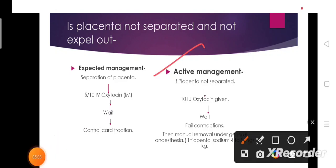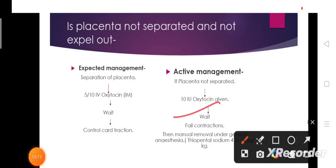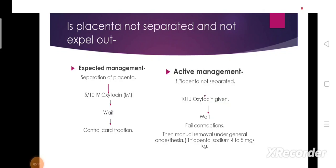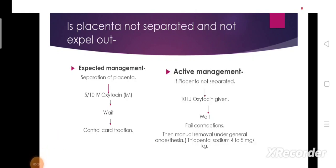In active management, if the placenta is not separated, 10 international units of oxytocin are given, then wait, followed by controlled contractions. If contractions fail, manual removal under general anesthesia is performed. This completes the third stage management of labor.